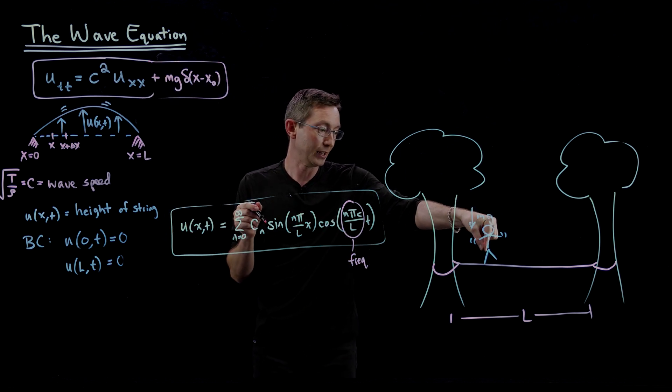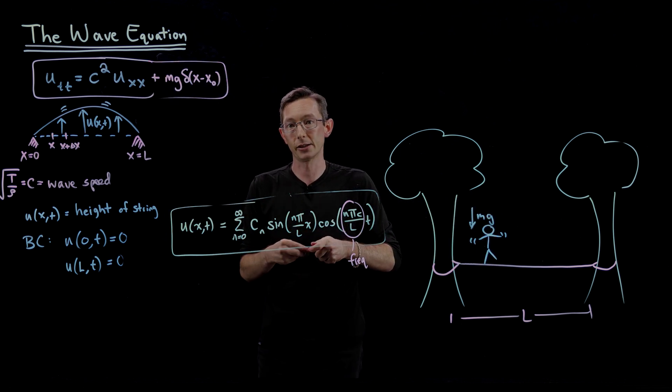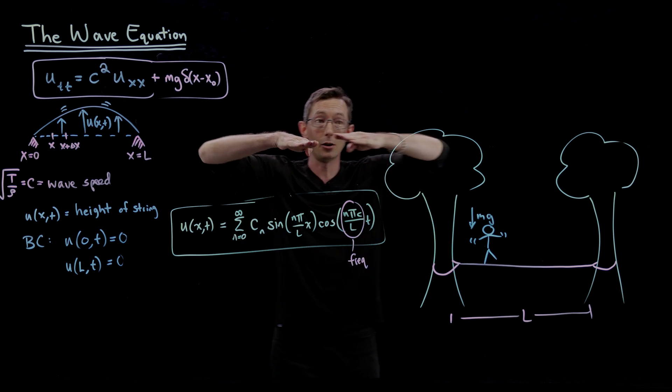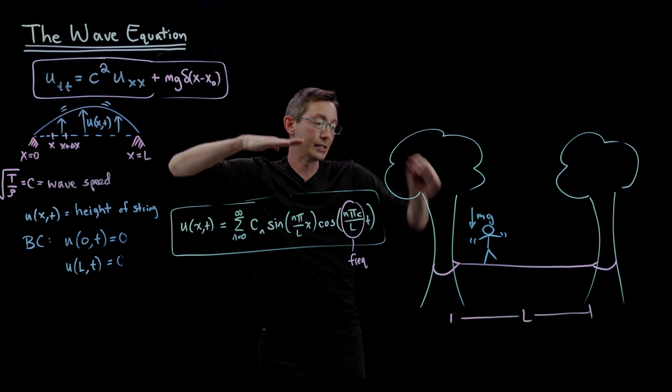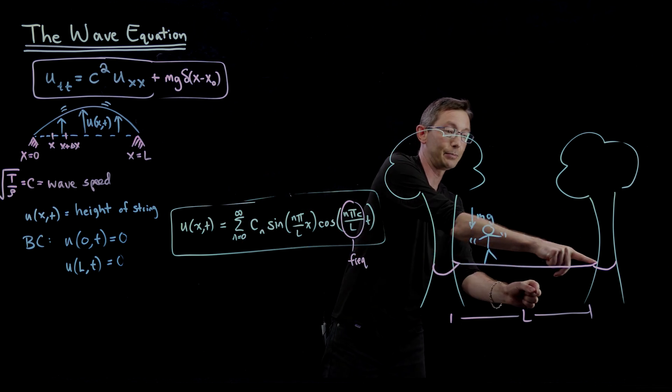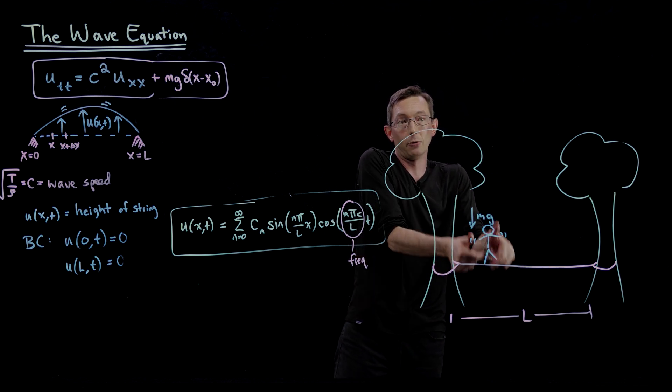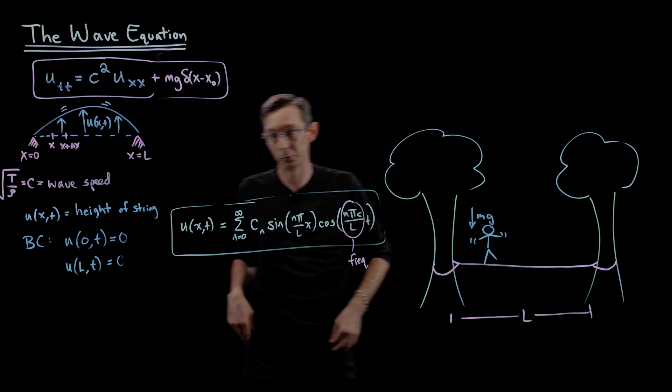And I think what that's going to mean is that the steady state is no longer flat—the steady state is going to be deflected so that person is being pulled up by the tension in that rope, by the y component of the tension in that rope.